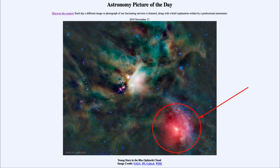All of these features are associated with regions of star formation. Stars are currently forming here, and we can actually see that young cluster of stars which has just formed in our image today. So that was our picture of the day for November the 17th of 2019, titled Young Stars in the Rho Ophiuchi Cloud.